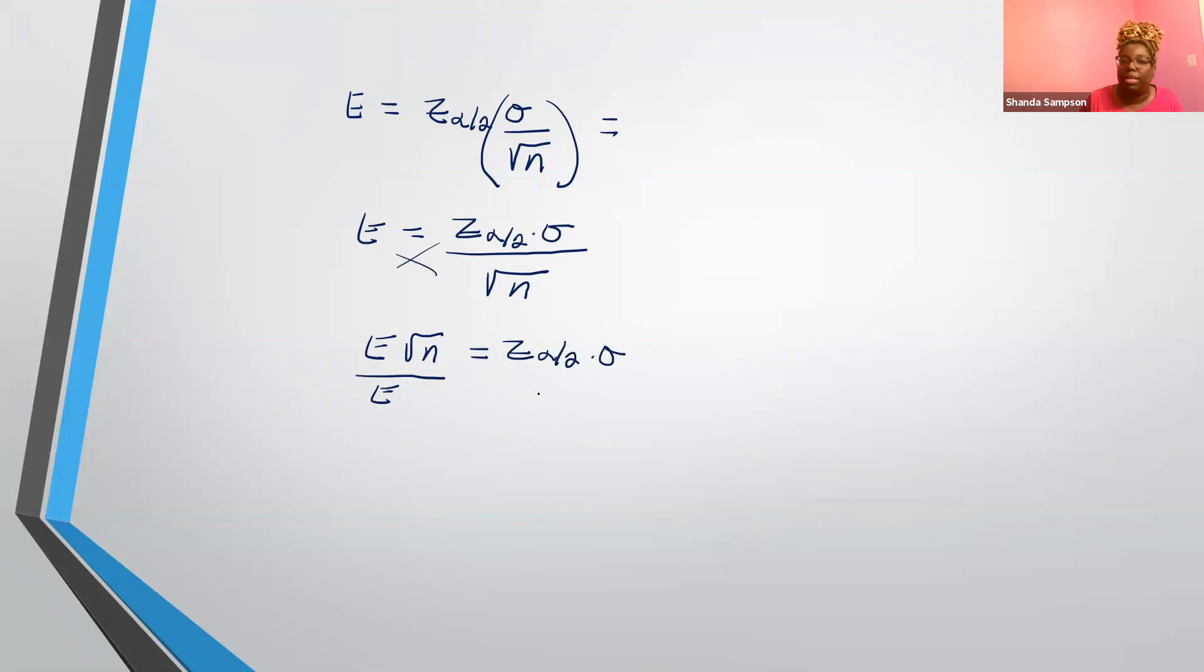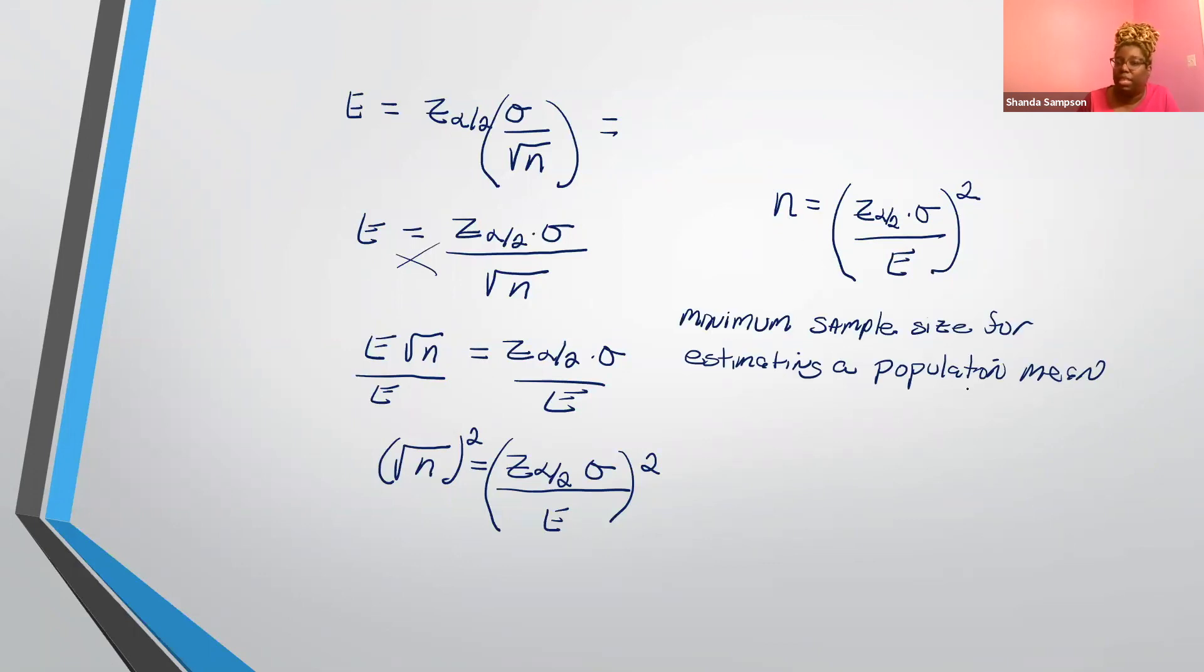But we can rewrite this to look like this. We can rewrite this as z alpha over two times sigma all over square root of n. Do a little algebra, cross multiply. You have e times the square root of n is equal to z alpha over two times sigma. We're trying to solve for n, divide by e. Now we have the square root of n is equal to z alpha over two times sigma over e. And earlier in the semester, I said, how do you get rid of a square root? You have to square it. So the formula to find n is equal to z alpha over two times sigma all over e square. So this n that we found is the minimum sample size for estimating a population root.